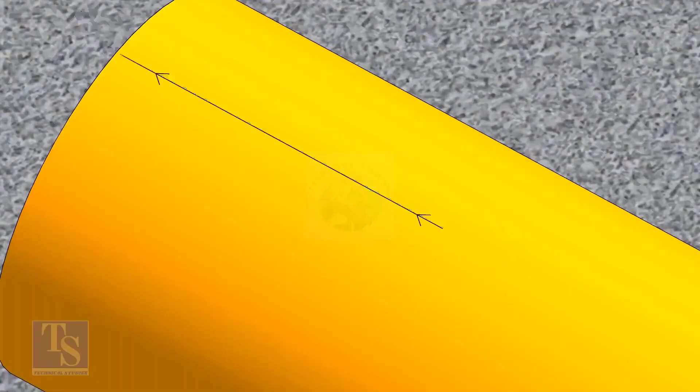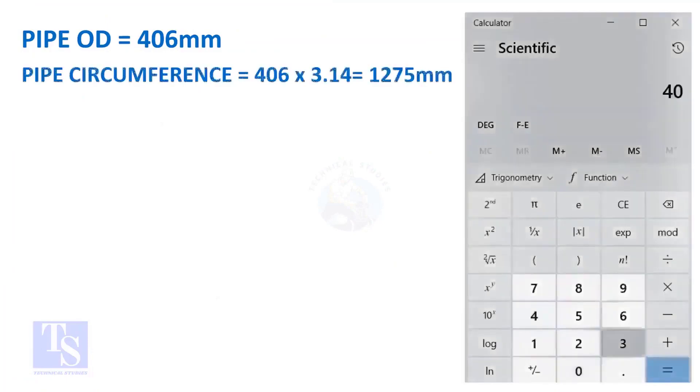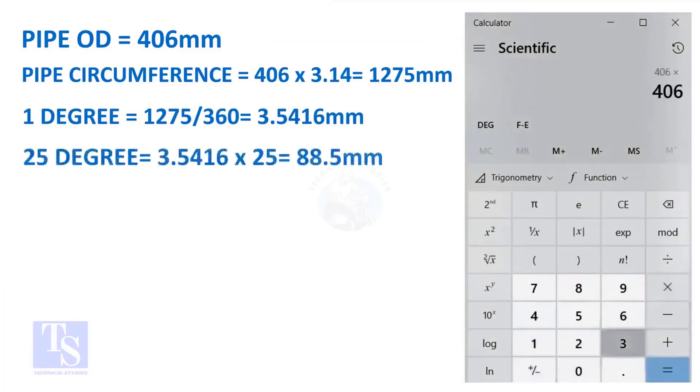Let us calculate the circumferential distance or arc length for 25 degrees. Multiply the OD by 3.14, you will get the circumference of the pipe. Divide the circumference by 360, you will get the arc length of 1 degree.